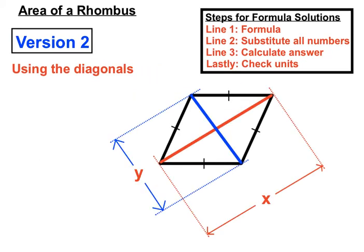If we are given the diagonals, we'll use half of that. Half of one diagonal times the other diagonal. So it depends on what numbers you're given in the question as to which version of the rhombus formula you'll choose to use there.